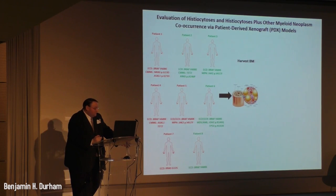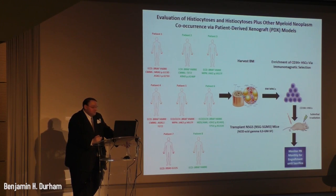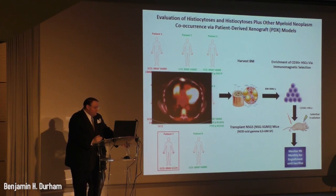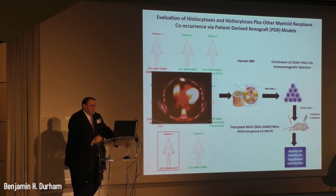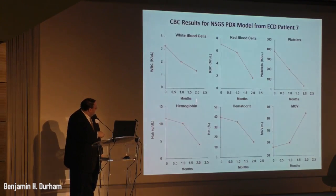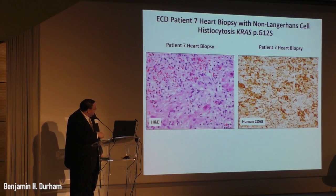We harvested bone marrow from these patients, enriched CD34-positive hematopoietic stem cells using immunomagnetic selection, and transplanted them into NSG-S mice via tail vein injection. We monitored mice using peripheral blood and sacrificed them when moribund. The first mouse to become moribund was a xenograft from Patient 7, an Erdheim-Chester disease patient driven by KRAS G12S, who also had cardiac involvement. The patient's heart biopsy showed massive infiltration of myocardium by foamy histiocytes that were strongly CD68-positive.